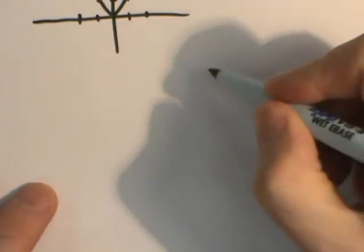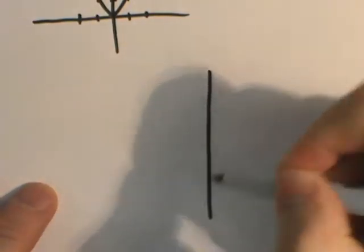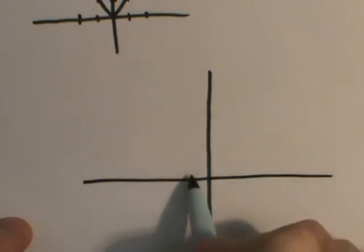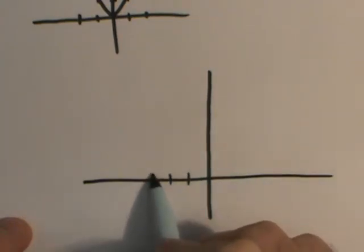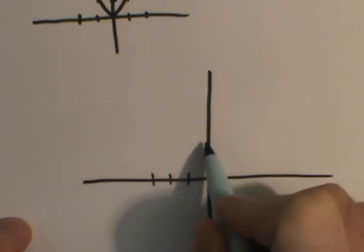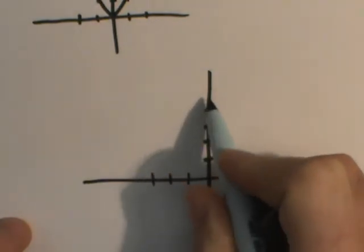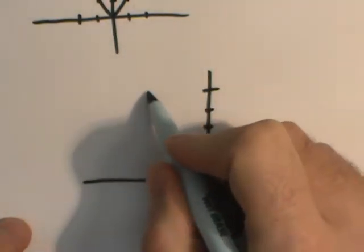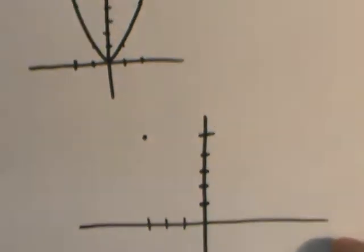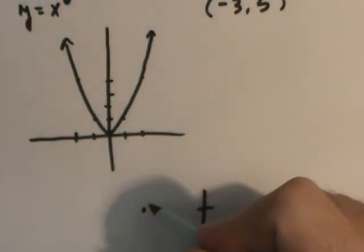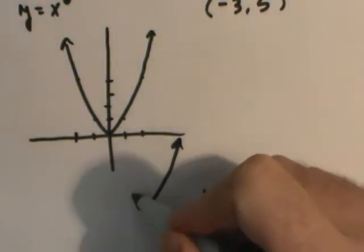So let me explain. Here's my xy plane. I'd have to move to the left one, two, three, and up one, two, three, four, five. Meaning that I now want my vertex to be up here and then it would open the exact same way.